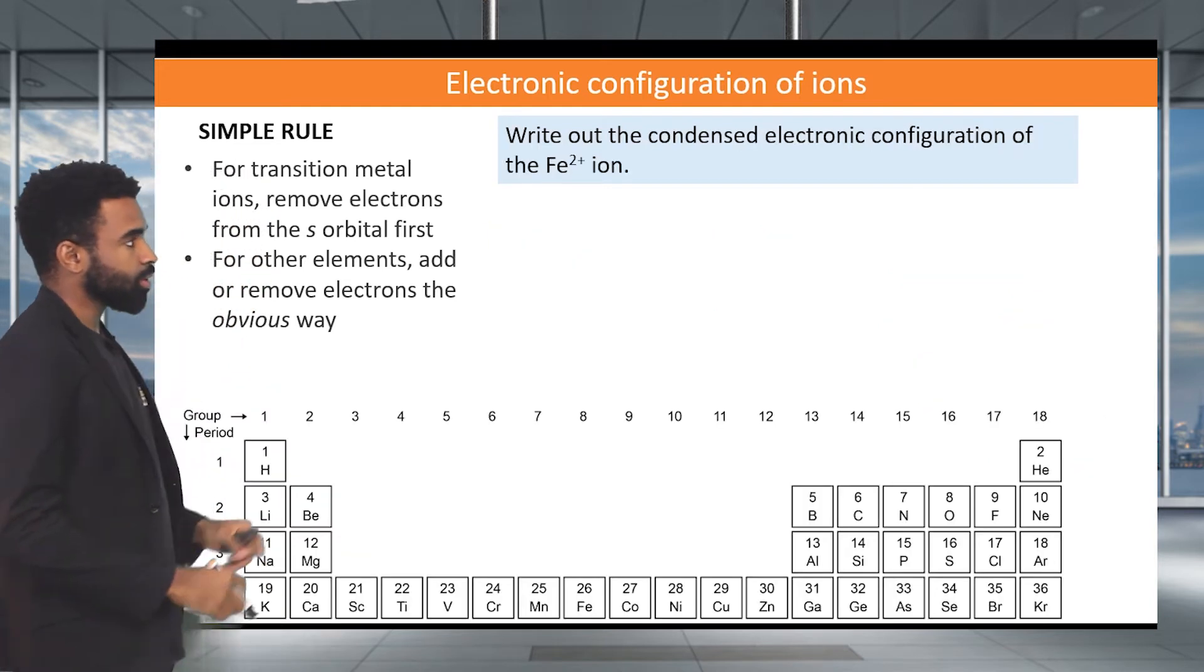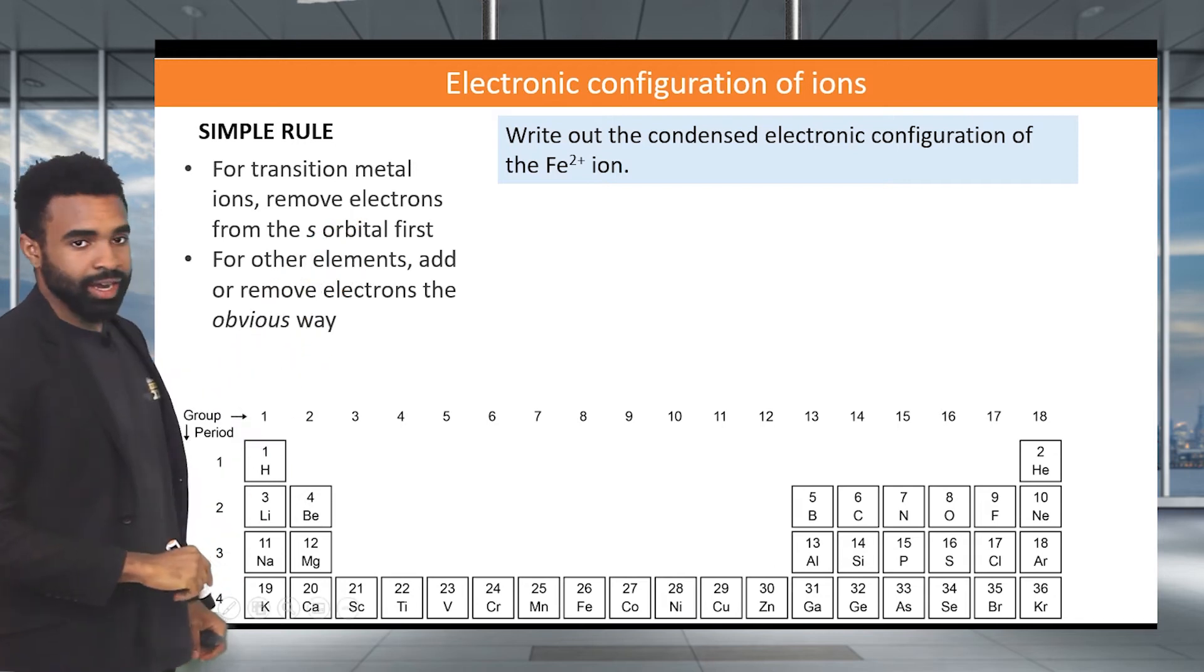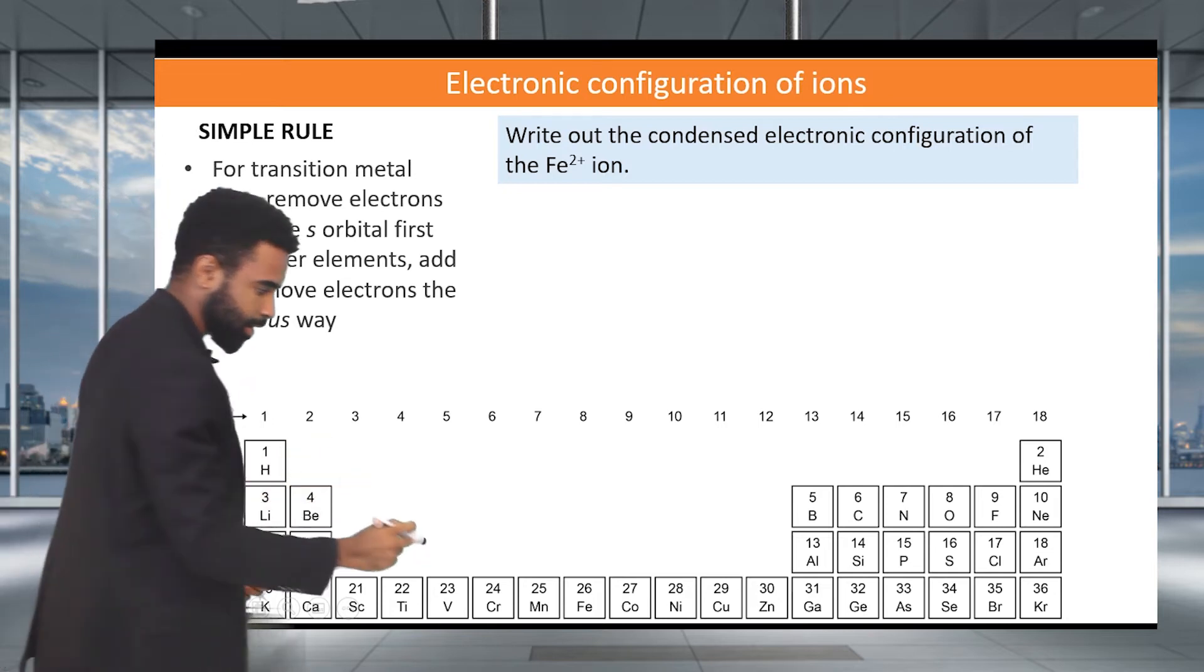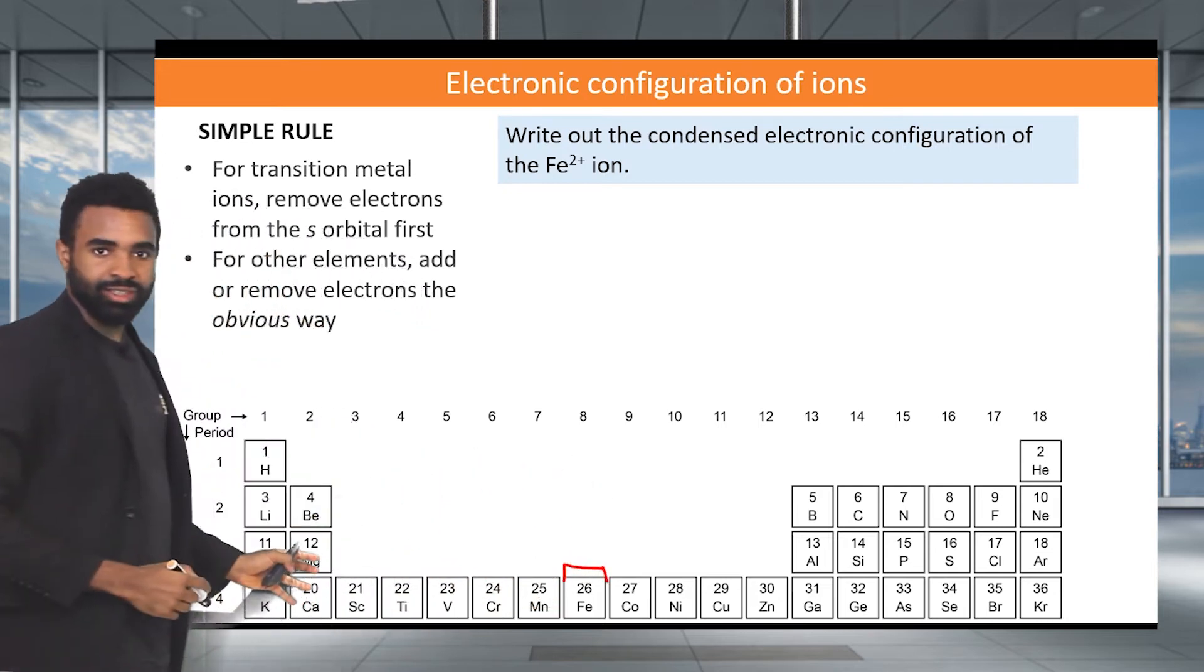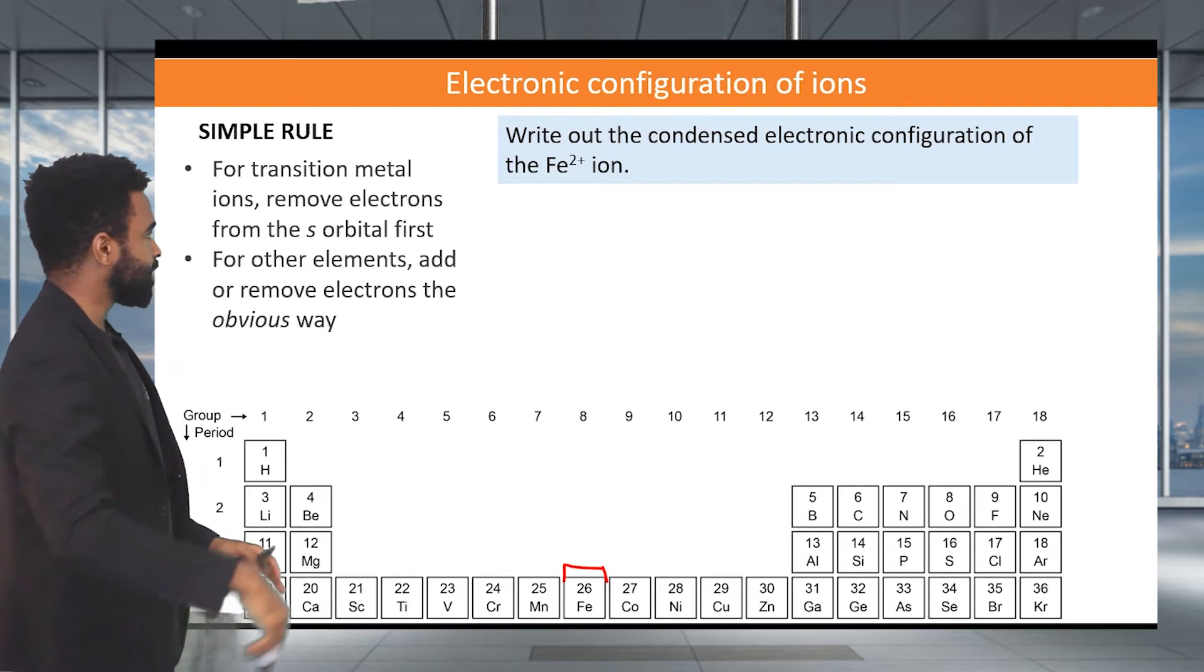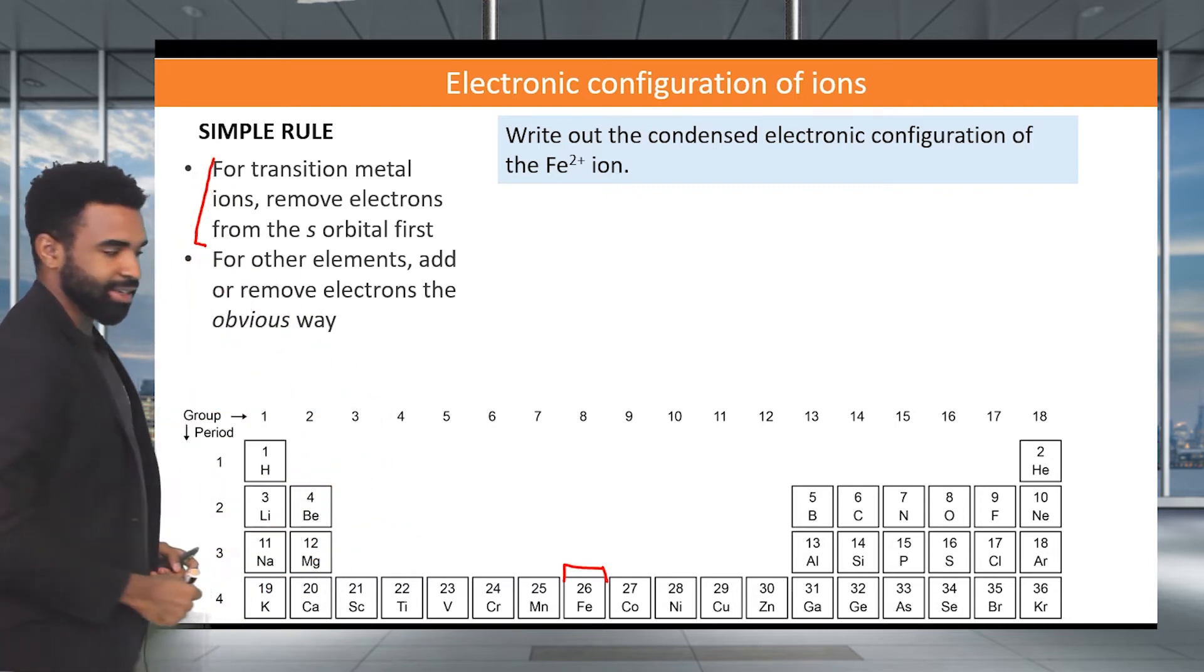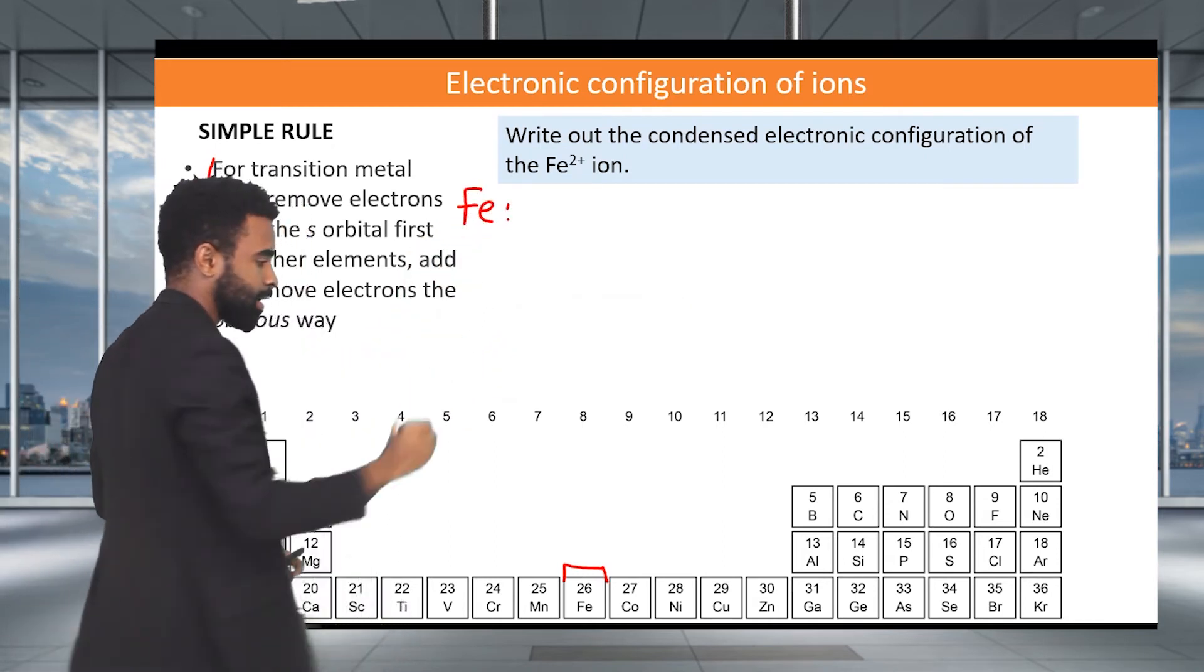Let's look at another one. For this one, we're asked to write the condensed configuration of the Fe2+ ion. So where is Fe? Where is iron? Iron is here. And this is indeed a transition metal ion or it's a transition metal and therefore its ion is going to be a transition metal ion. So we need to use this special rule. But first of all, let's write out the condensed configuration for neutral fluorine. So let's start out just with neutral fluorine. How do we do this? Let's use the periodic table method here.